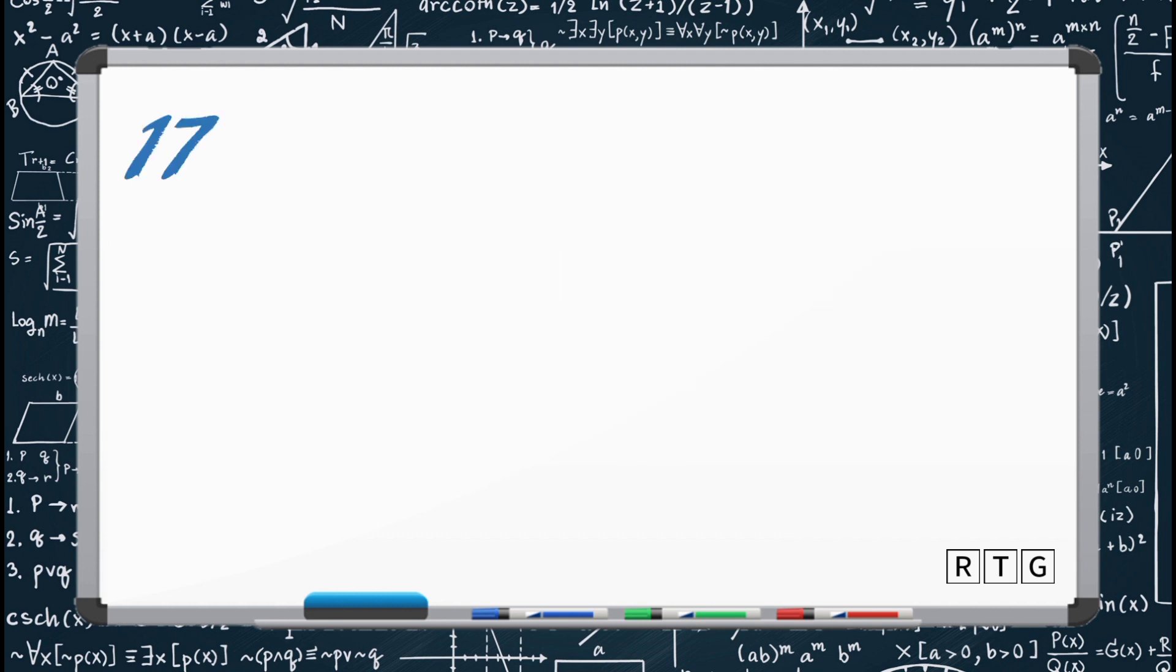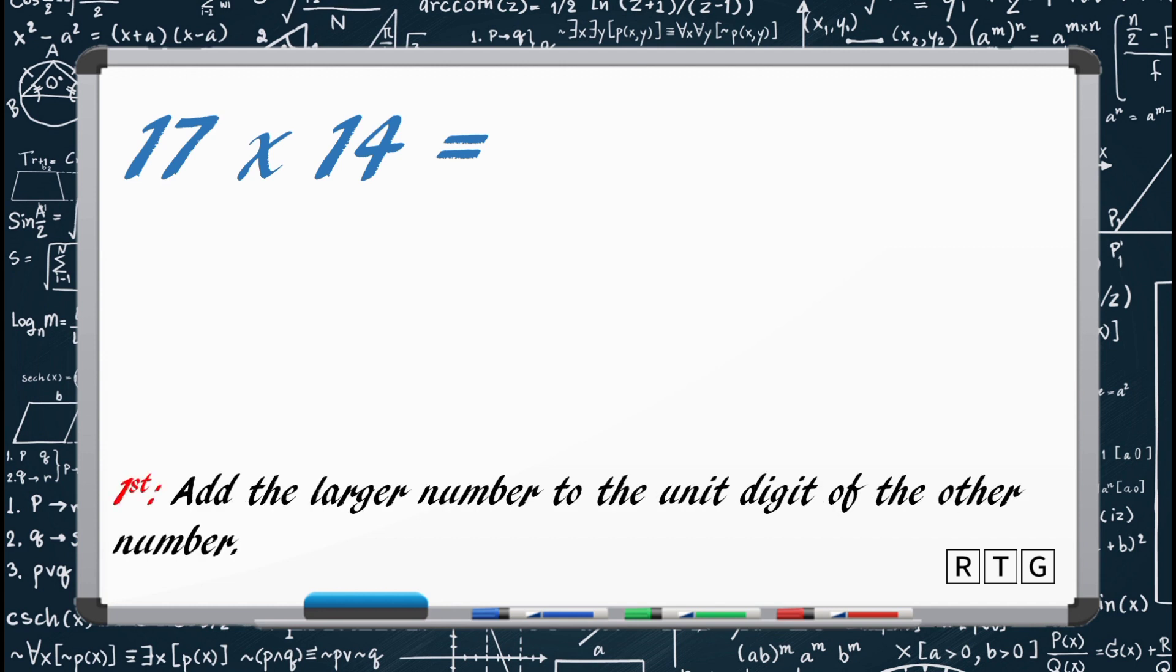For the first example, let's say we are going to multiply 17 and 14. First step, we only have to add the larger number to the unit digit of the other number. The larger number between the two is 17, while the unit digit of the other number is 4.